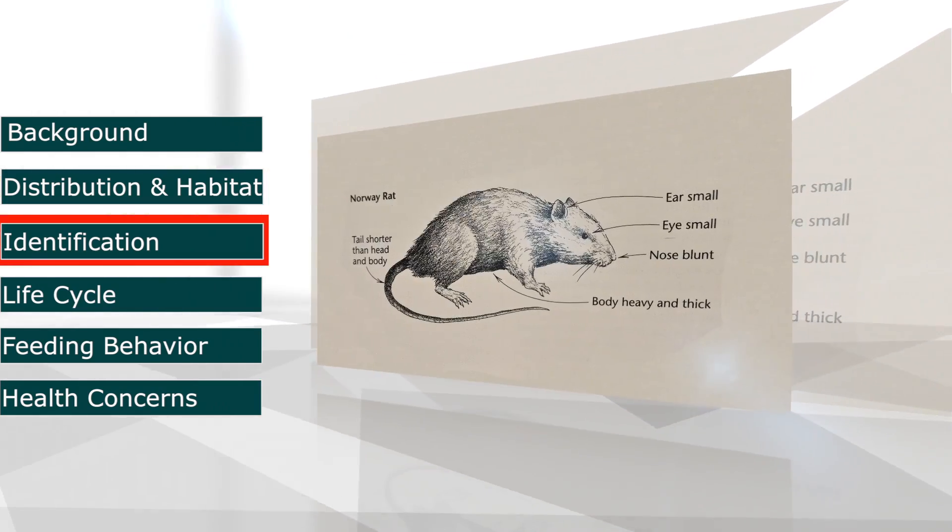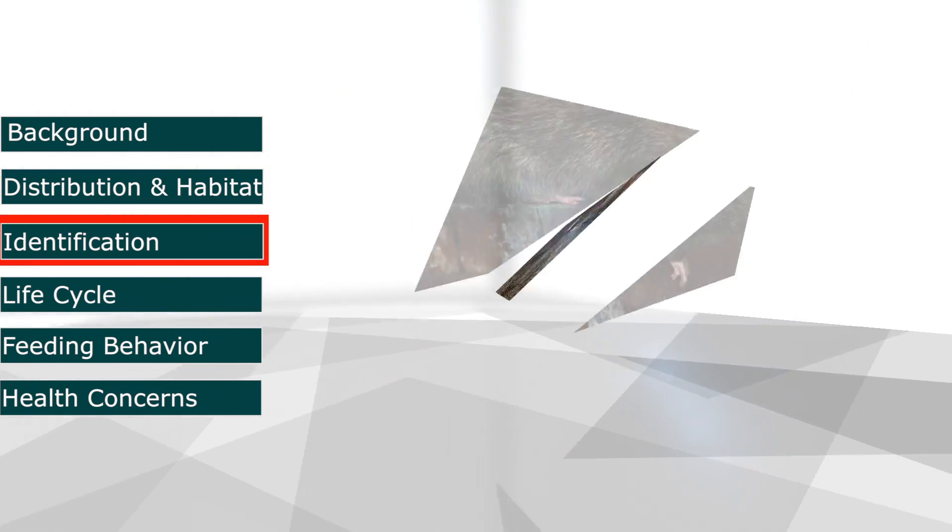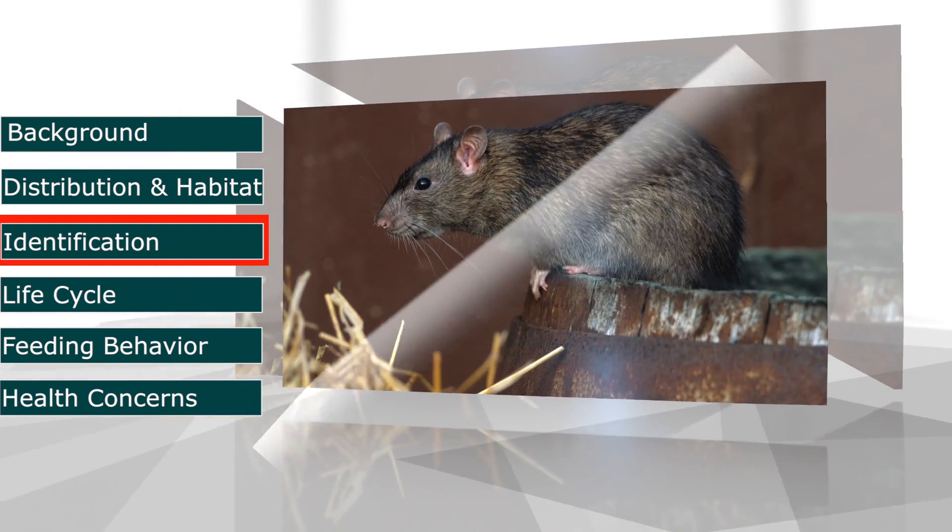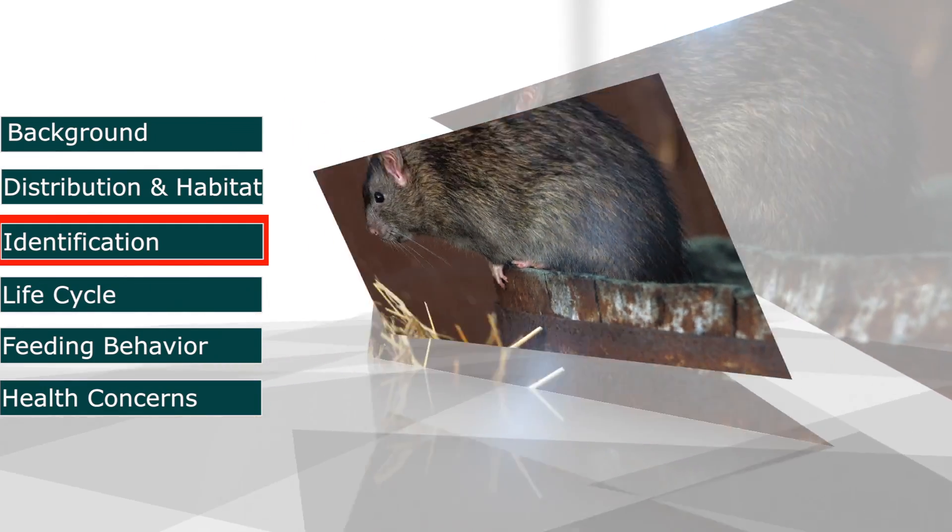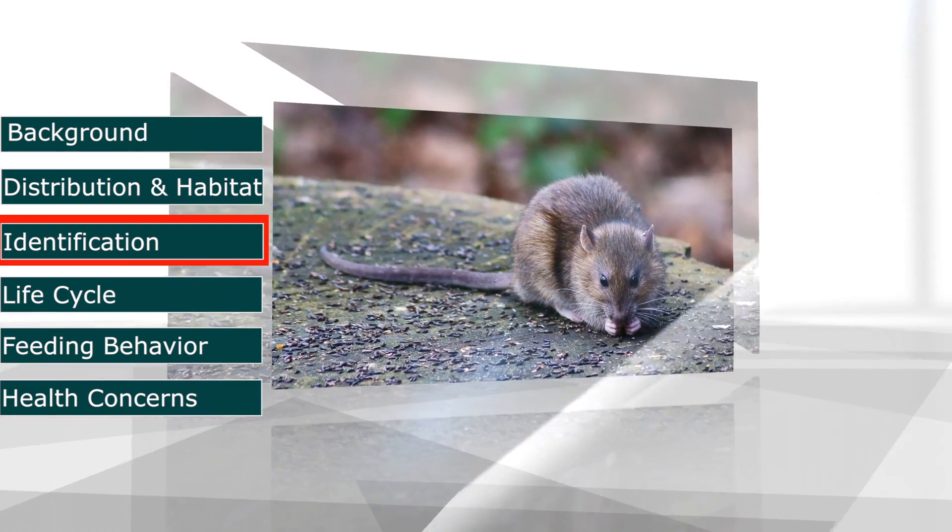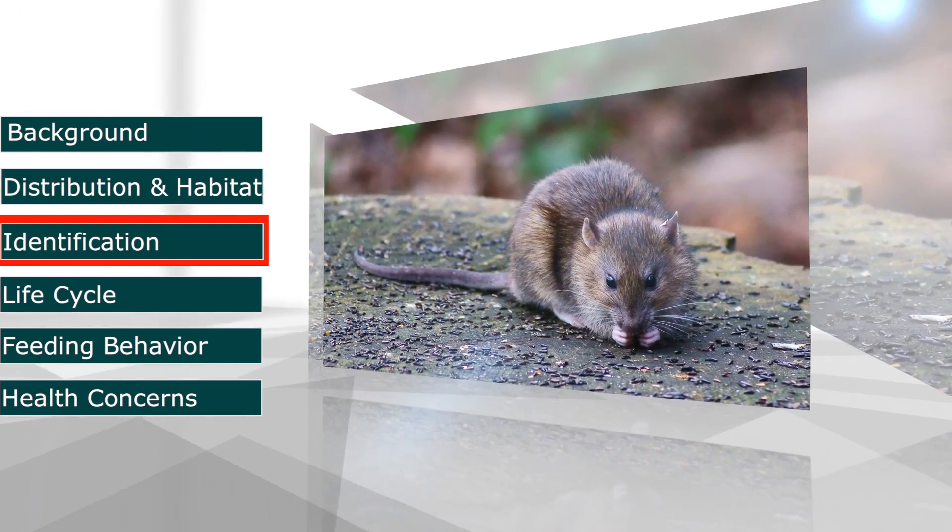Norway Rats are stocky and range from about 7 to 10 inches in length, plus a 6 to 8 inch long tail. They are grayish brown with a pale gray underbelly. Norway Rats can weigh up to 12 ounces.